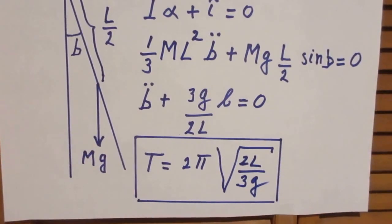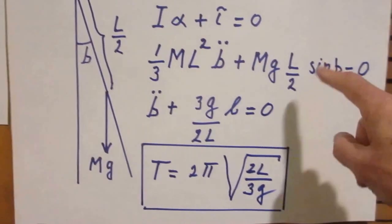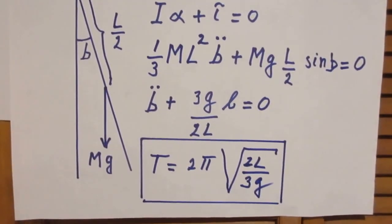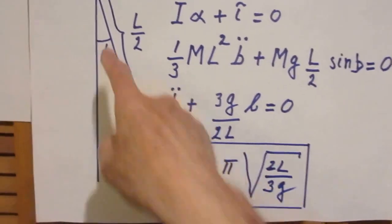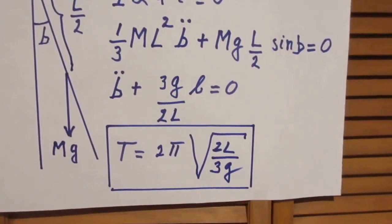The torque is mg times L over 2, but don't forget the sine of B, because torque is a cross-product. And so you must take the angle into account, in this case there is the sine of B, and that is zero.